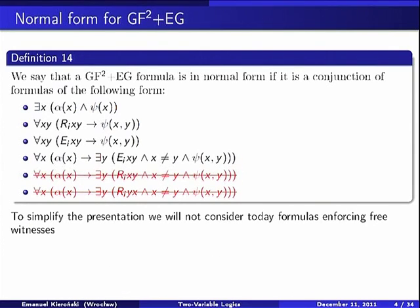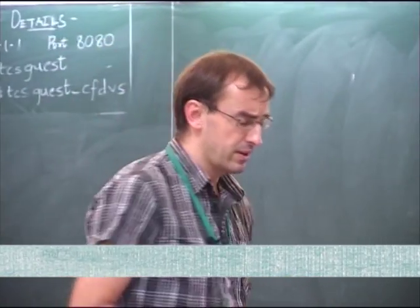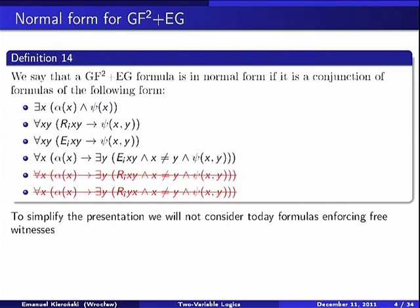In today's talk — yesterday we considered the general satisfiability problem for the two-variable guarded fragment with equivalence guards — today we will consider the finite satisfiability problem. To simplify the presentation, I will not consider conjuncts which may require witnesses connected by non-equivalence relations. So in fact we can only say about requiring witnesses inside equivalence classes. This simplification is not crucial and it will be left as an exercise.